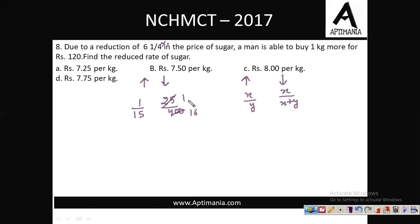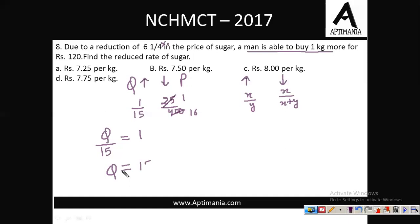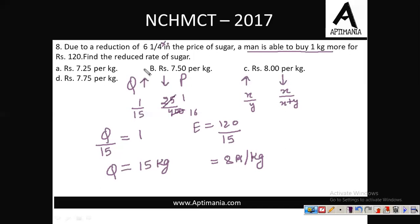The decrement was 1/16, so the increment in quantity is 1/15. A man is able to buy 1 kg more, so q/15 = 1, meaning initial quantity q = 15 kg. Total expenditure is 120 rupees for 15 kg, so initial price is 8 rupees per kg. After the reduction, 120 rupees buys 16 kg, so the new price is 7.5 rupees per kg. The correct answer is option B, rupees 7.5.